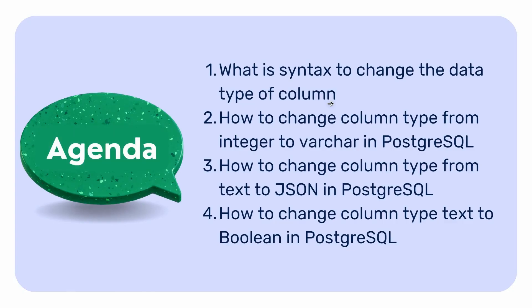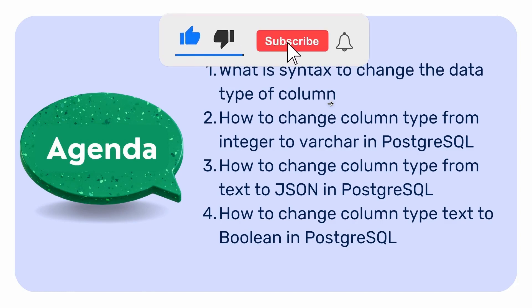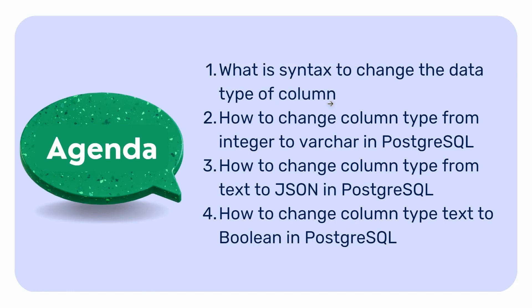First we are going to learn about the syntax for changing column data type in PostgreSQL. Then we will learn how to change data type from integer to varchar in PostgreSQL. After this we will learn how to change data type from text to JSON. And at the end of this tutorial we will learn how to change the data type from text to boolean.